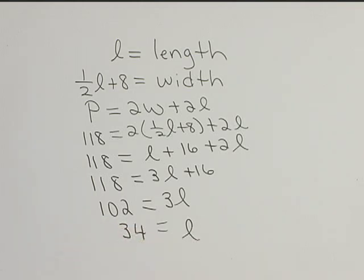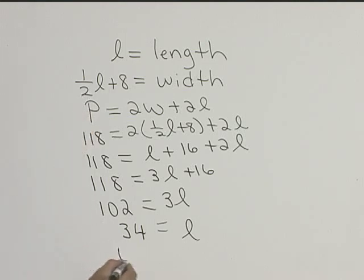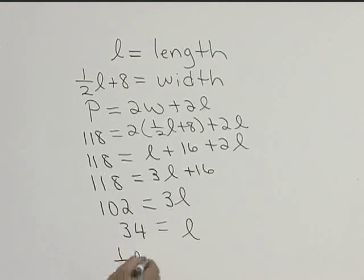So the length of our rectangle is 34. We need to find our width. Well, here's the formula for the width. We have one half L plus 8.